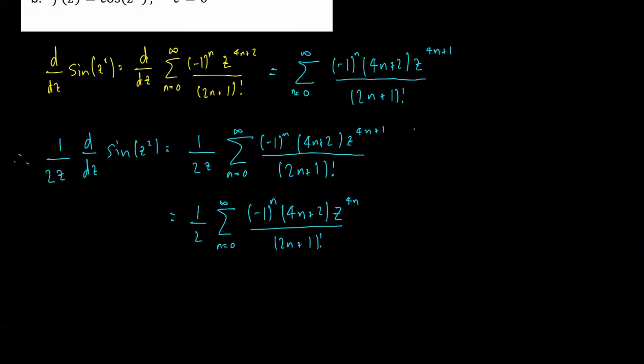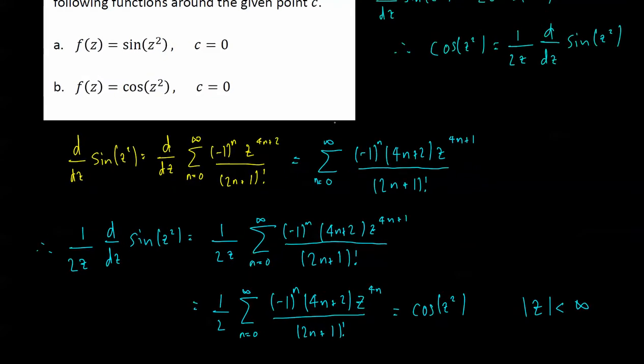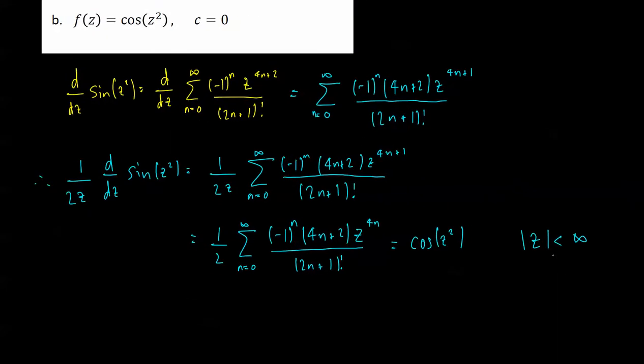And that is the solution, that is equal to what? To cos(z²), and it's valid for all of z. So |z - 0|, because that's the point we're expanding about, less than infinity, the radius of convergence is entire.